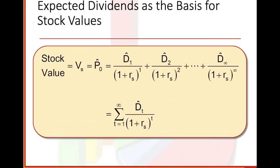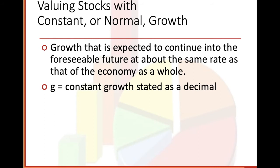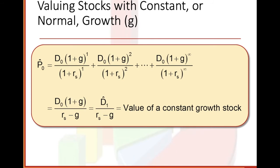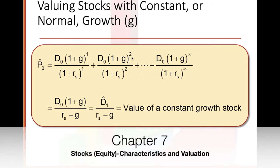Expected dividends as the basis for stock values. Our growth rate G applies from D-sub-one through D-sub-two all the way to D-infinity, divided by the growth rate — summed from T equals one to infinity. Value in stocks with constant or normal growth is growth expected to continue into the foreseeable future at about the same rate as that of the economy as a whole. G is the constant growth rate stated as a decimal. The formula for the value of a constant growth stock is: P-sub-zero equals D-sub-one divided by (R-sub-S minus G).